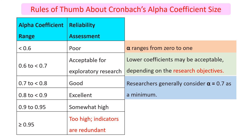Moving to the last section: the rule of thumb about the coefficient alpha size. If the alpha coefficient is less than 0.6, the reliability assessment is poor.